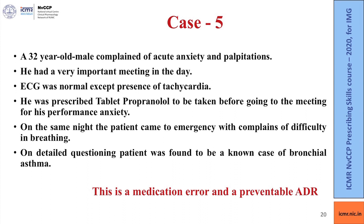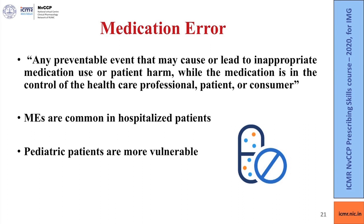A 32-year-old male complained of acute anxiety and palpitations before an important meeting. ECG was normal except for tachycardia, and he was prescribed tablet propranolol for performance anxiety. On the same night, the patient came to emergency with complaints of difficulty in breathing. On detailed questioning, the patient was found to be a known case of bronchial asthma. This is an example of a medication error and a preventable ADR: propranolol is a non-selective beta blocker which causes bronchoconstriction and is therefore contraindicated in patients with asthma. This example highlights the importance of taking a detailed history of the patient's illness.